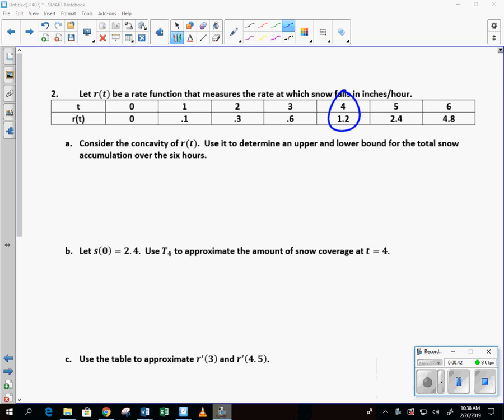Let me pause the video so we can meet the need. Okay, here we go. So we've got at four hours, the snow is falling at a rate of 1.2 inches per hour. It doesn't mean that 1.2 inches of snow has fallen thus far. It just means at this time, 1.2 inches per hour is falling at four hours. You can see it continues to increase. So it says consider the concavity of R of T and use it to determine an upper and lower bound for the total snow accumulation over the course of six hours. Oh boy, what the heck does that even mean?